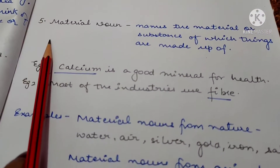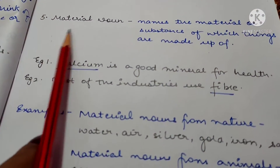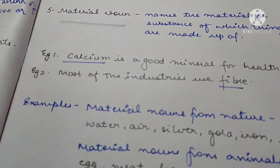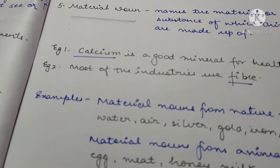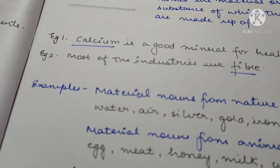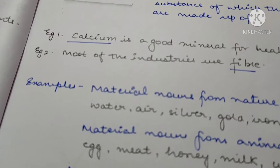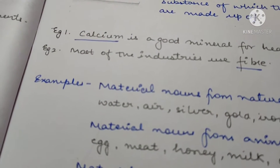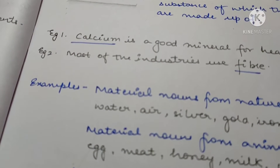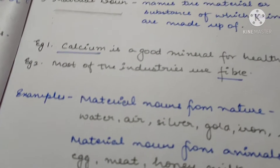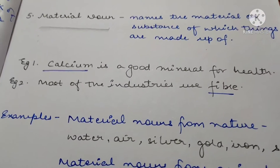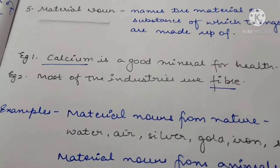Coming to the last kind of noun — that is your fifth one, material noun. Till now, we have discussed four kinds of noun: proper noun, common noun, collective noun, and abstract noun. Now coming to the last kind of noun, that is your material noun.